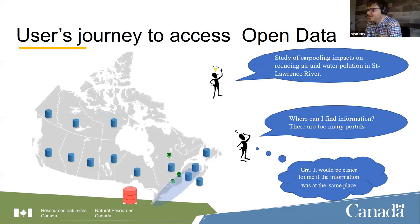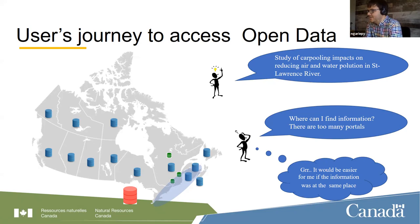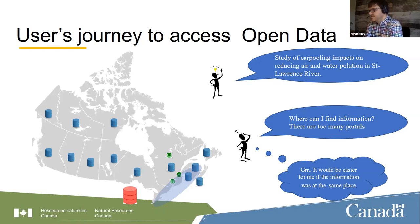The journey for accessing open data can be quite difficult due to the multiple sources. As an example, if someone wants to research the positive impact of carpooling on air and water quality across the St. Lawrence River area, they will probably need to search more than seven portals — the Canadian portal, Ontario, Quebec, New Brunswick, Nova Scotia, and cities like Toronto, Montreal, or Quebec City. It would be easier if all the information were accessible in a single portal regardless of the data source.